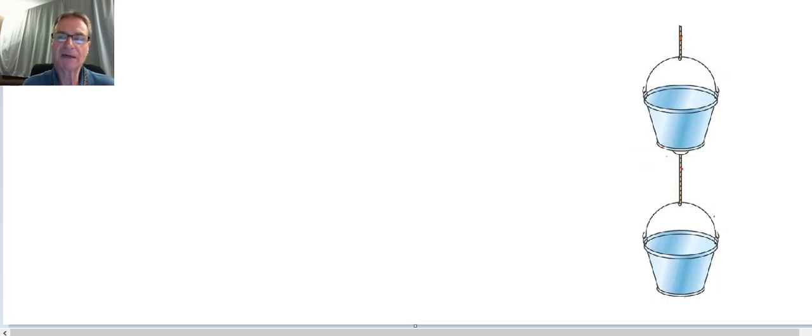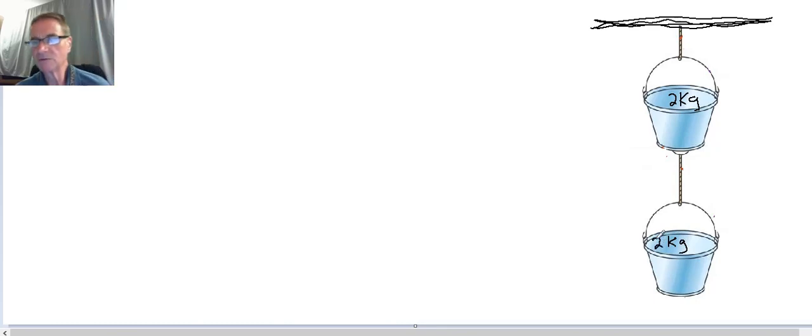What we've got is two buckets hanging by ropes. We'll assume this one here is connected to a tree branch or something. So they're connected, and we're going to give these buckets a mass of two kilograms each.